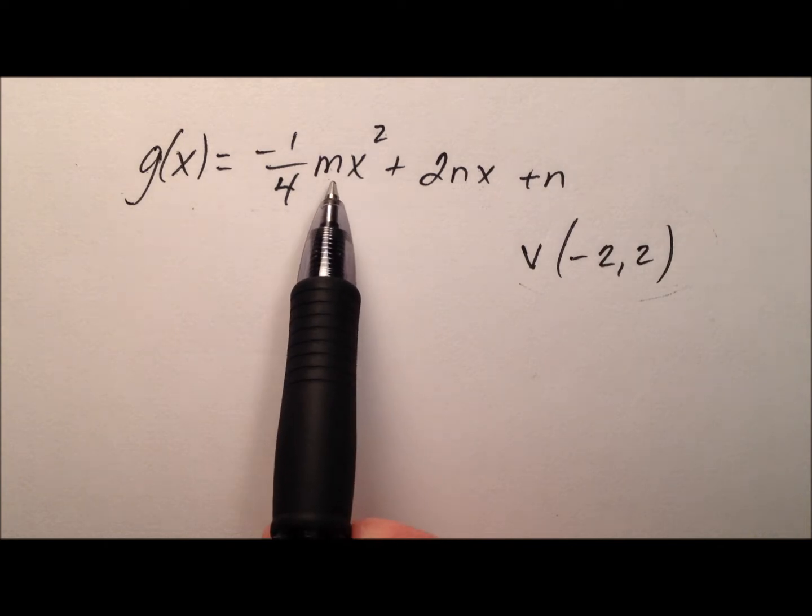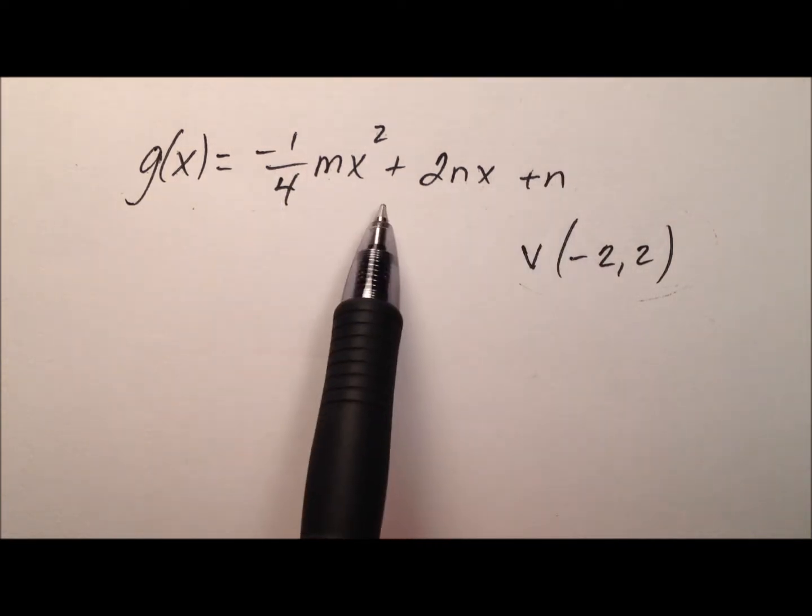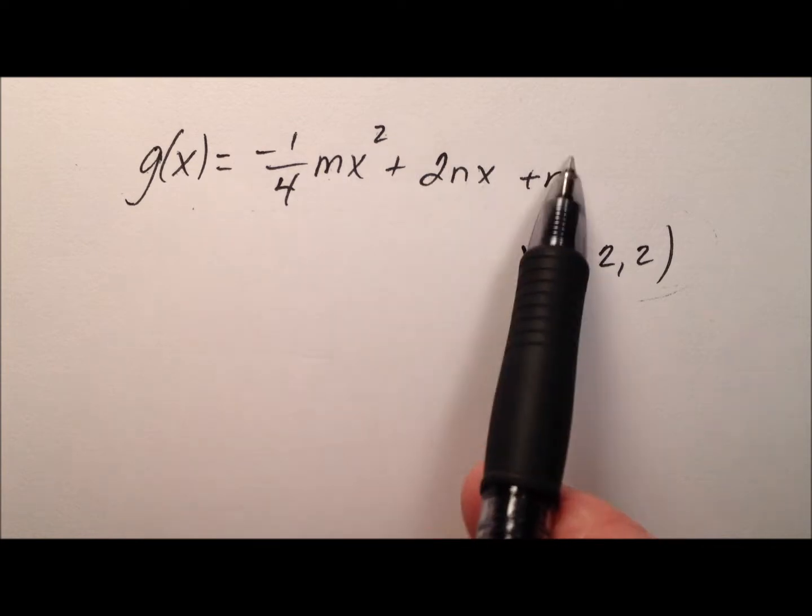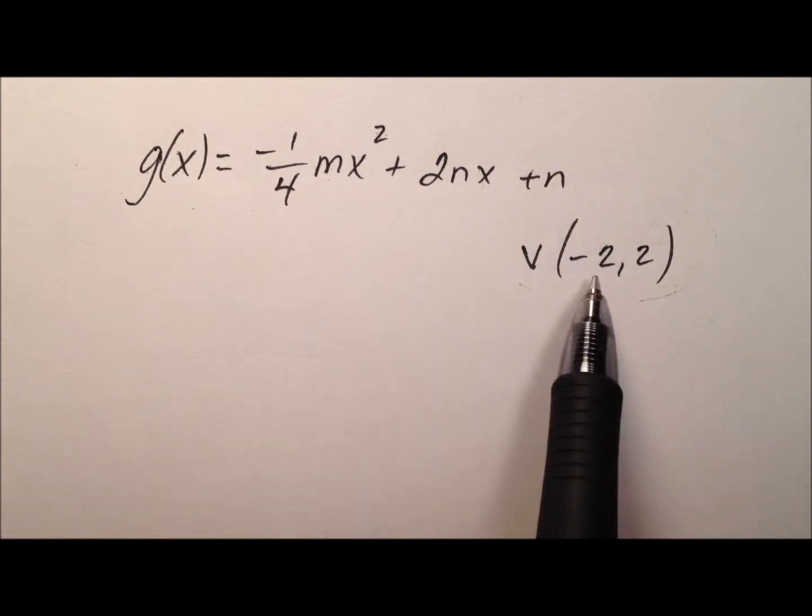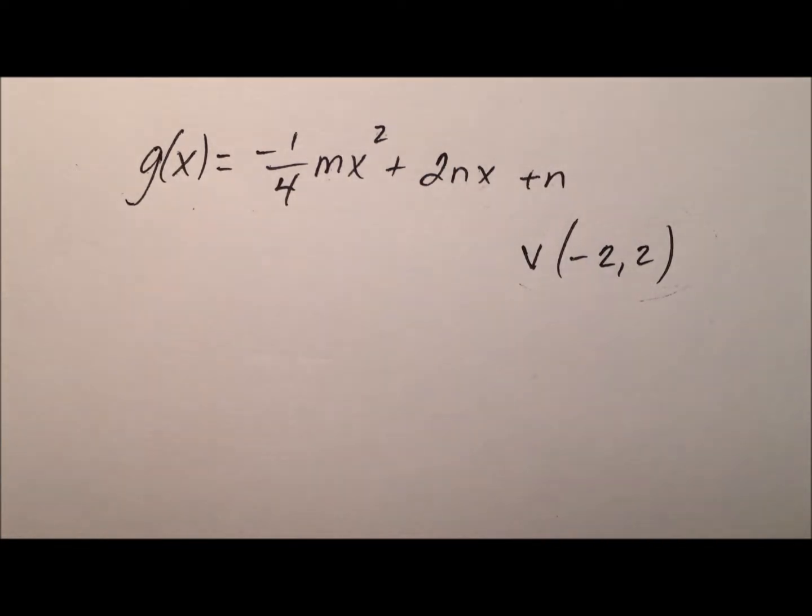And so, we're looking for values for m and n that will make this true. That'll fill it in, we'll have a nice quadratic function in standard form, and its vertex will be negative 2, 2.